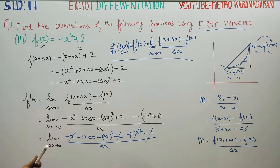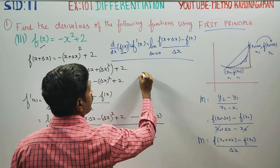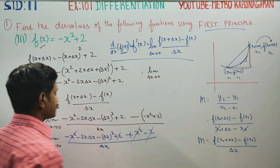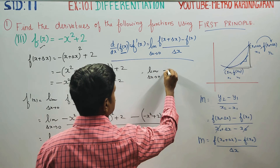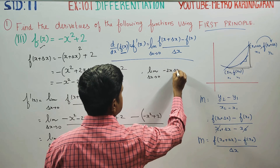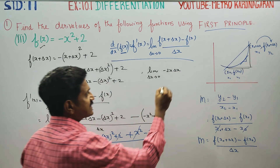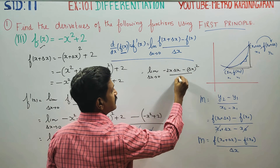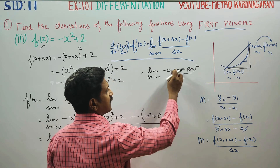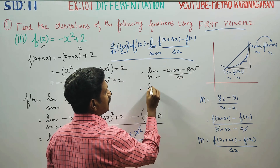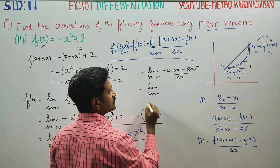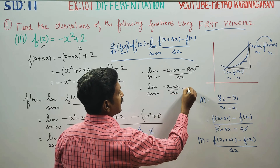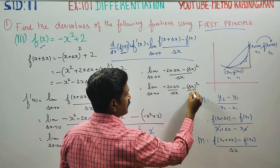Simplifying: limit delta x → 0 of [-2x·delta x / delta x - delta x² / delta x]. Since delta x is approaching 0 but not equal to 0, we can cancel delta x, giving: limit delta x → 0 of [-2x - delta x].